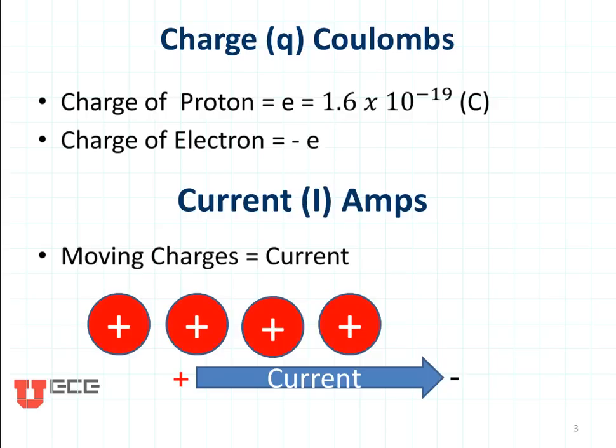Current, represented by I, is given in amps or amperes. Moving charges give us a current.